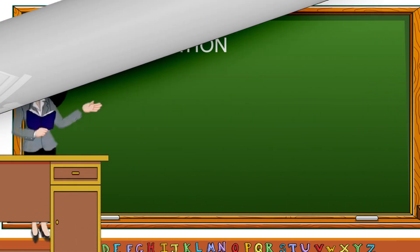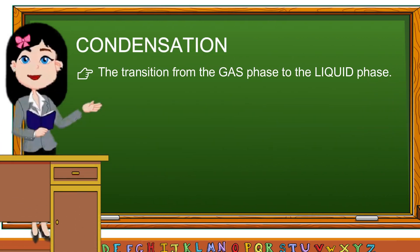When heat is removed from a material, the particles move slowly and closer together. This is how gas changes to liquid. This process is called condensation. Condensation refers to the transition from the gas phase to the liquid phase.